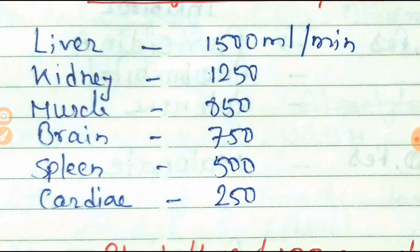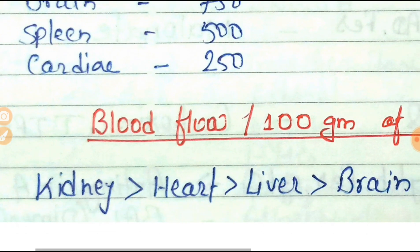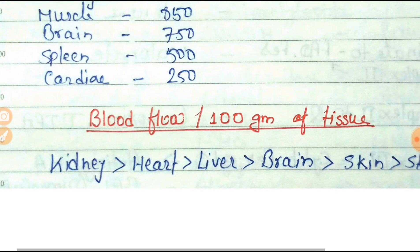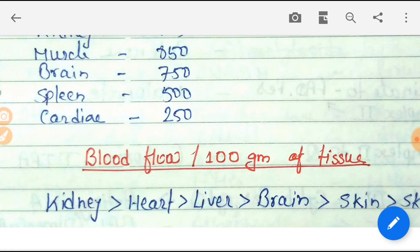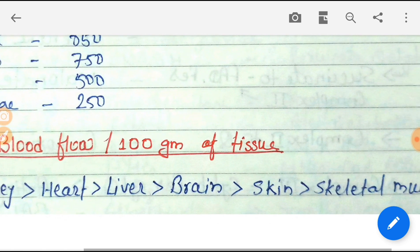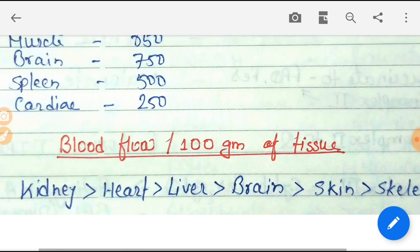Next is blood flow per hundred grams of tissue. The order is: kidney, then heart, after that liver, then brain, then skin, and after that skeletal muscles.